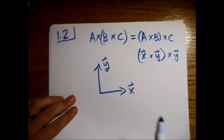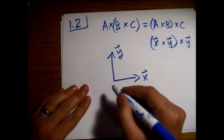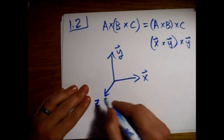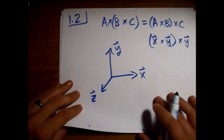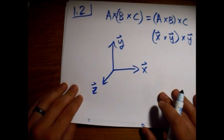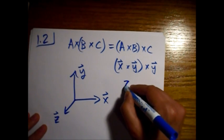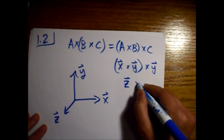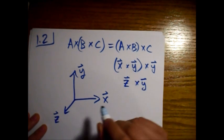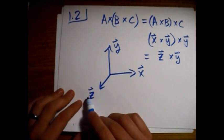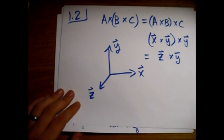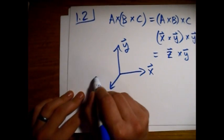Well, x cross y is some vector out in the z direction, which I'll just call z. So this is equal to z cross y, like that. Now if we take z cross y, we get a negative x.